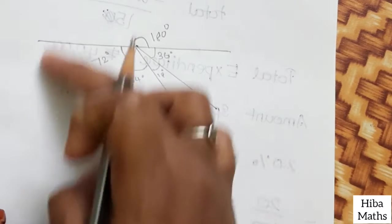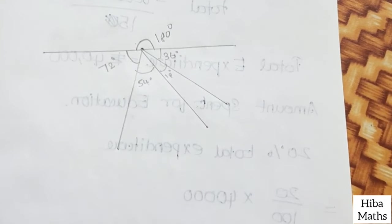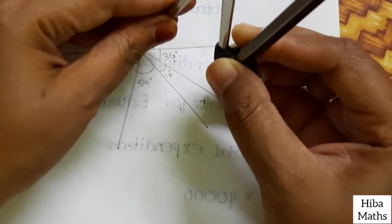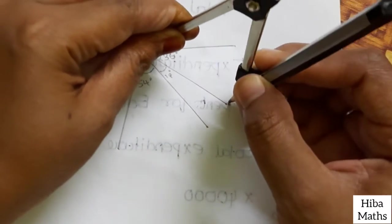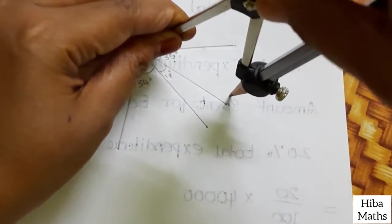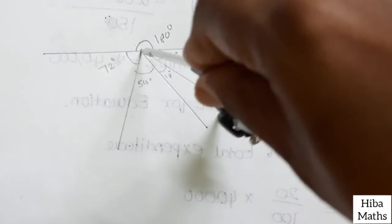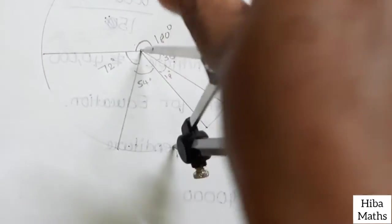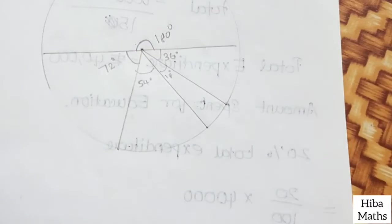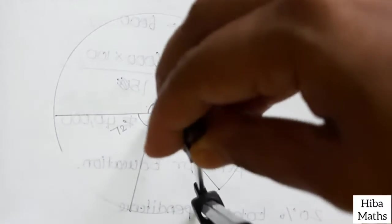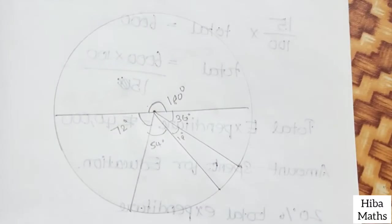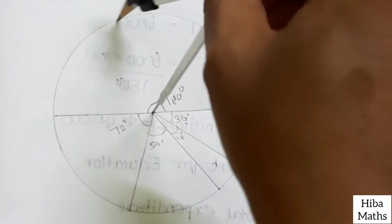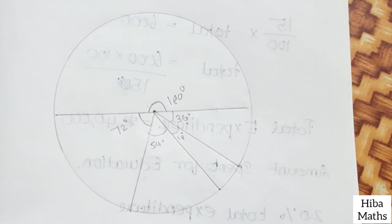Now we draw a circle with the compass. We drop the circle at the center point. The circle should be drawn neatly. The angles are clearly marked around the circle.